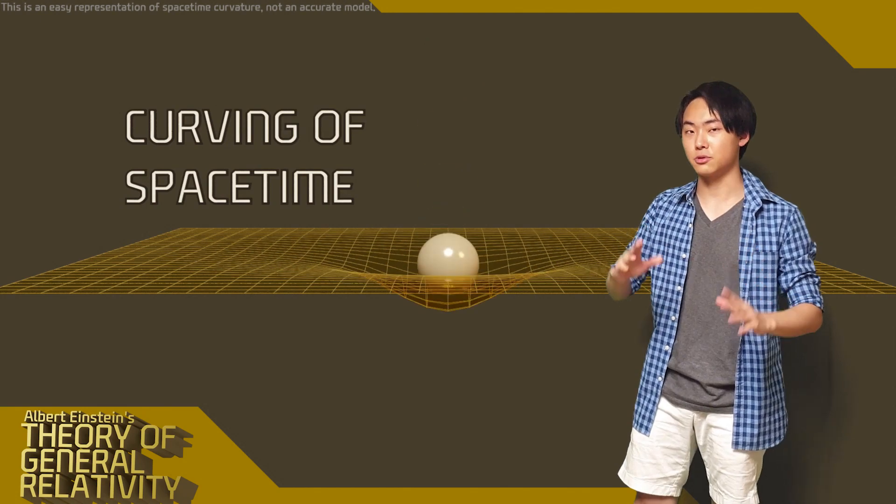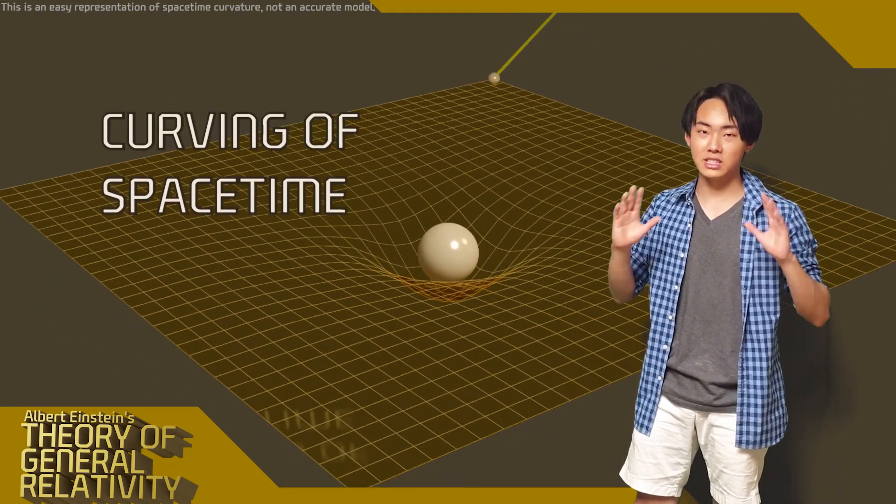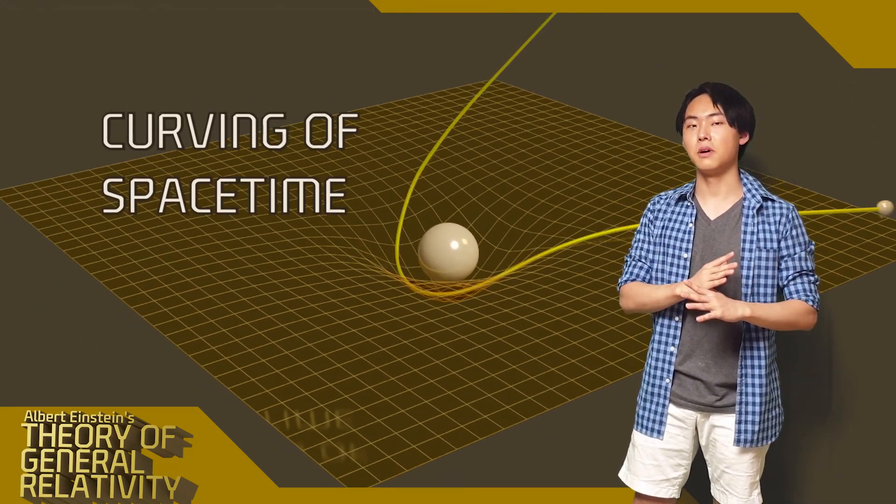On the other hand, Albert Einstein's theory of general relativity states that the curving of space-time towards mass creates a perception of gravity, not some magical force.